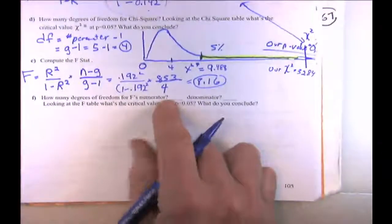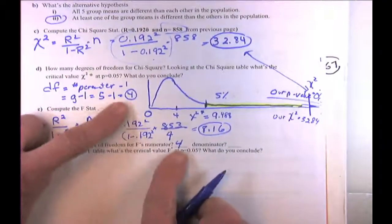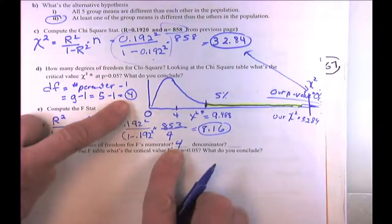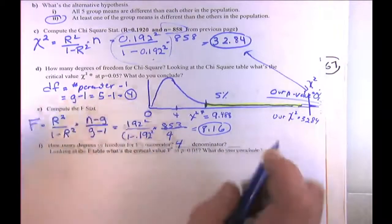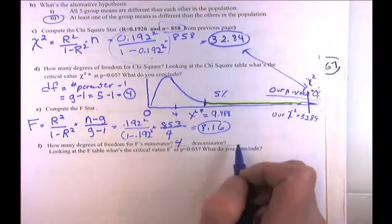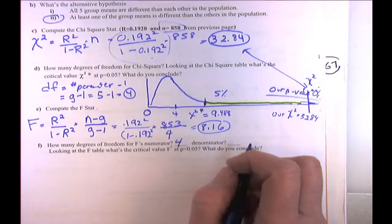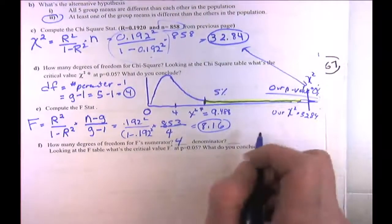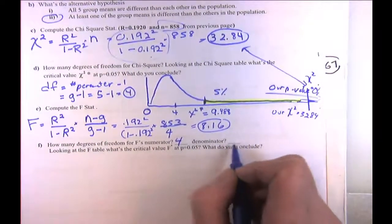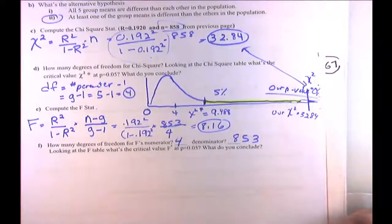The numerator degrees of freedom is exactly the same as chi-square — g minus 1 equals 4. The denominator takes into account our sample size minus the number of group parameters — that's n minus g equals 853.